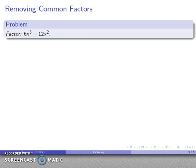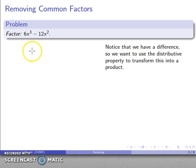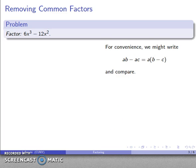The most important type of factoring is removing a common factor. A little analysis goes a long way. We check the type of expression: order of operations says exponents first, then multiply, and finally the last thing we do is subtract — so this is a difference. We want to use the distributive property to transform a difference into a product.